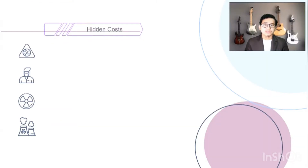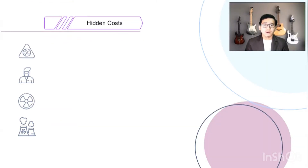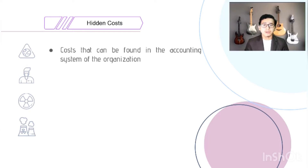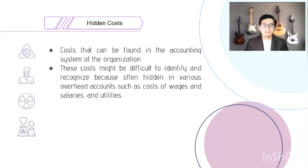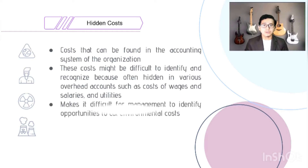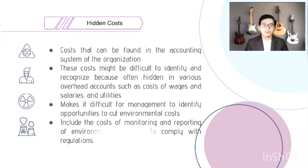The second tier is hidden costs, which can be found in the accounting system of the organization. These costs are difficult to identify and recognize because they are often hidden in various overhead accounts such as wages, salaries, and utilities. This makes it difficult for management to identify opportunities to cut environmental costs. It also includes the cost of monitoring and reporting environmental activities to comply with regulations.